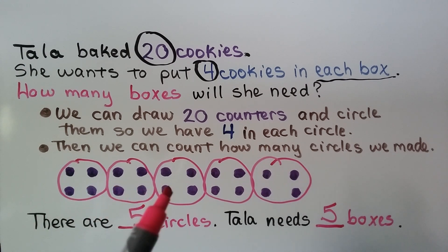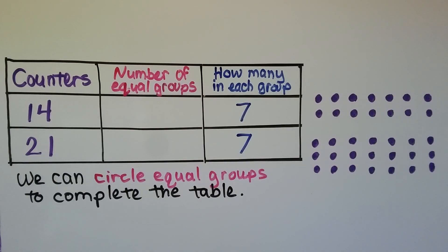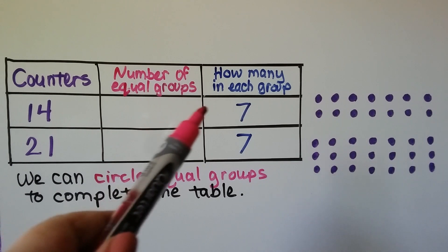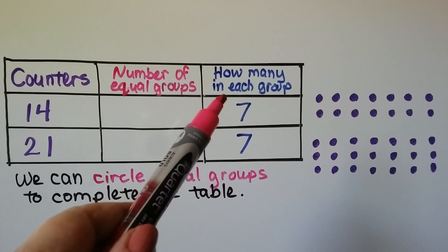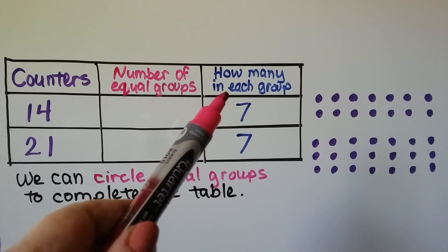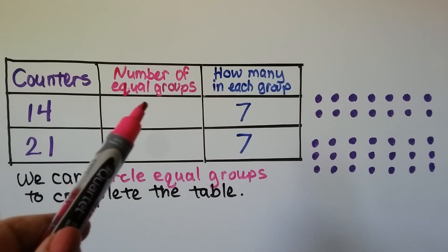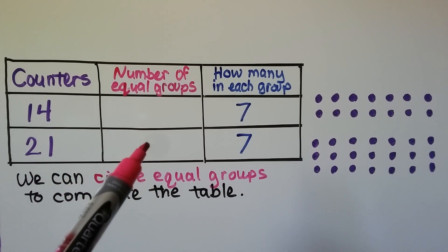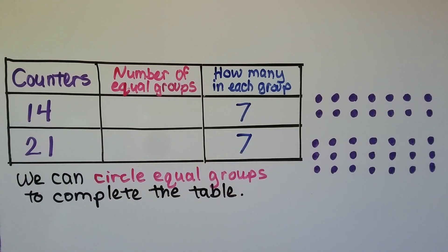Each circle represents a box. Here we have a table telling us there are fourteen counters — we don't know the number of equal groups, but we know there are supposed to be seven in each group. Then it says there are twenty-one counters with seven in each group as well, and we need to find the number of equal groups to complete the table.